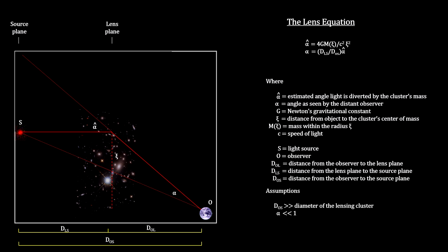On Earth, we observe the image to be on a straight line at an angle from its actual direction. The lens equation gives us these angles. This geometry enables us to map points seen on the lens plane back to its position on the source plane.